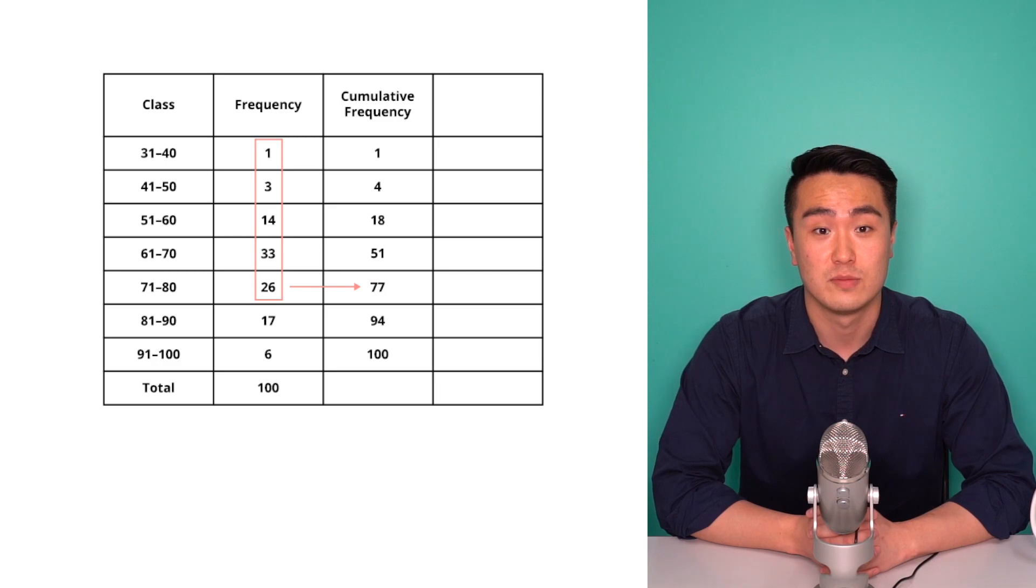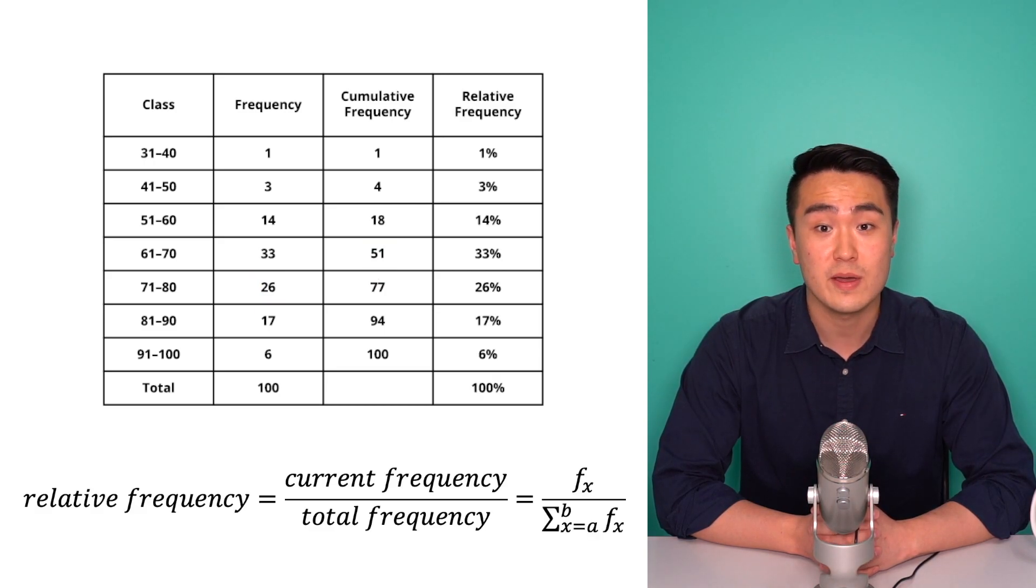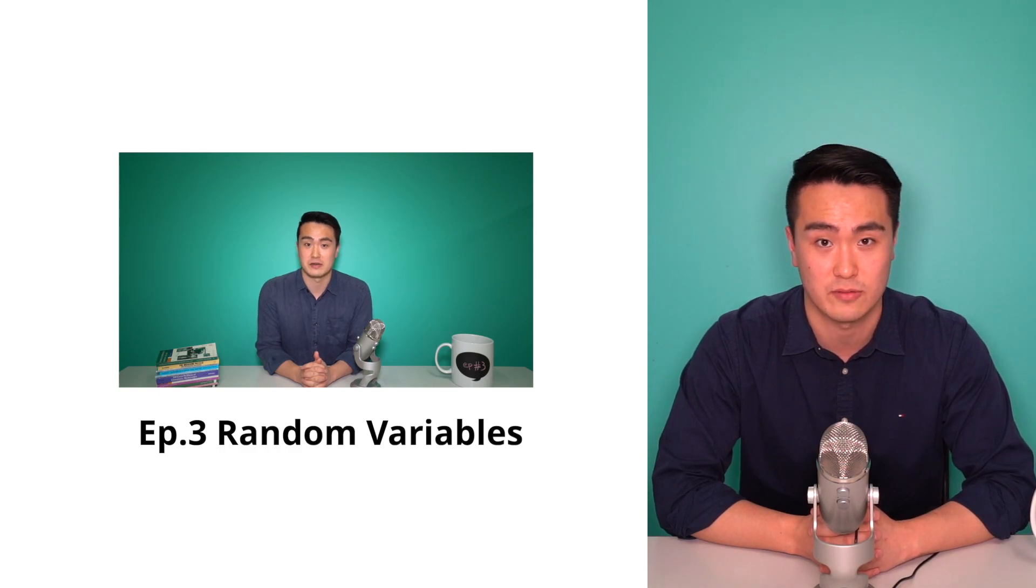Another way to find the cumulative frequency is to add the previous cumulative frequency and the current frequency together. We can also add the relative frequency column which is the proportion of the current frequency out of the total frequency. Note this is very similar to what a probability means, so we will be using relative frequencies a lot when we construct our probability distribution functions in episode 3.